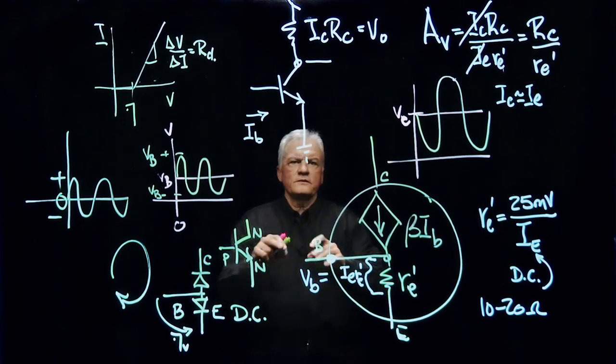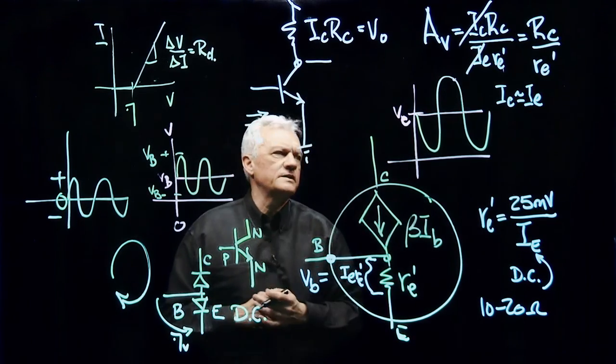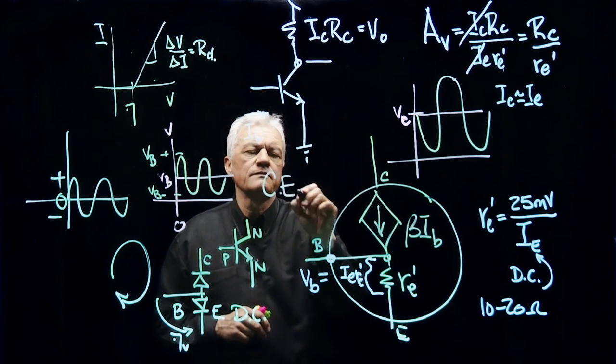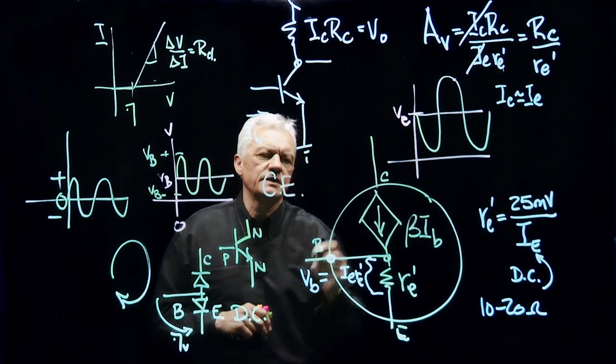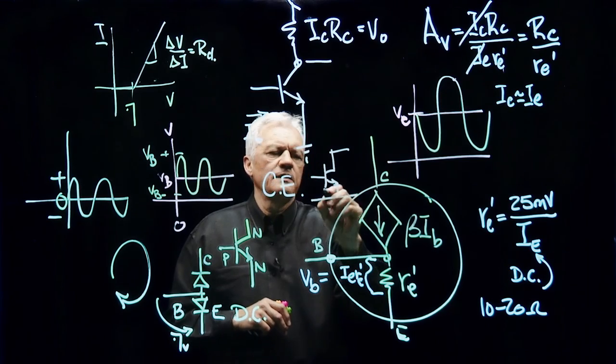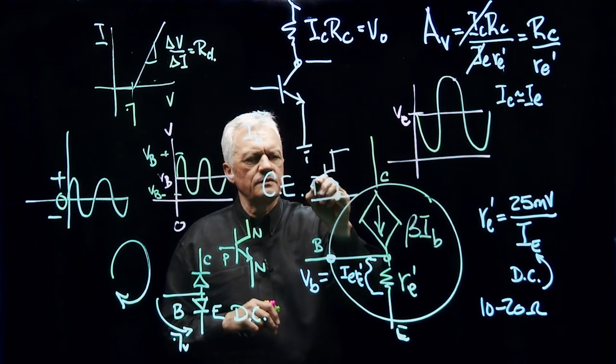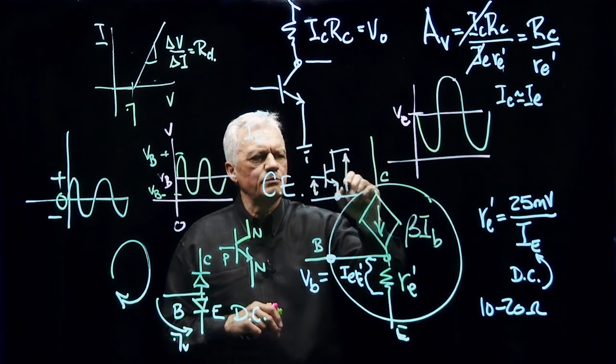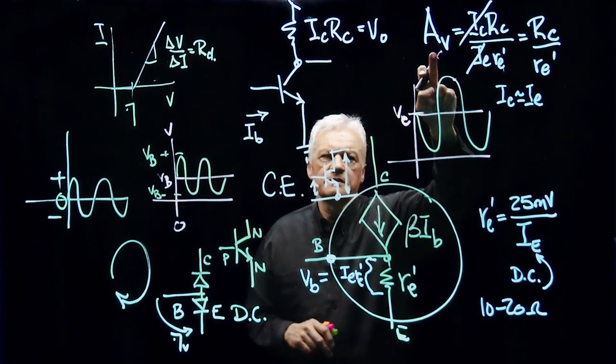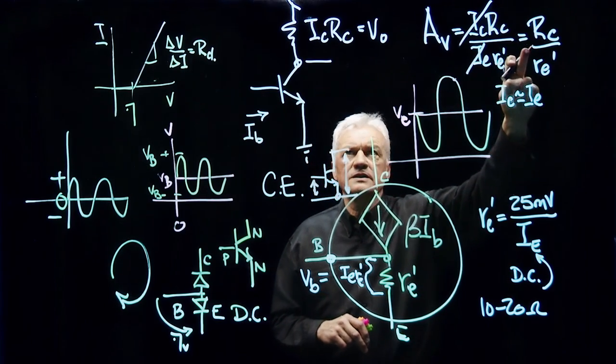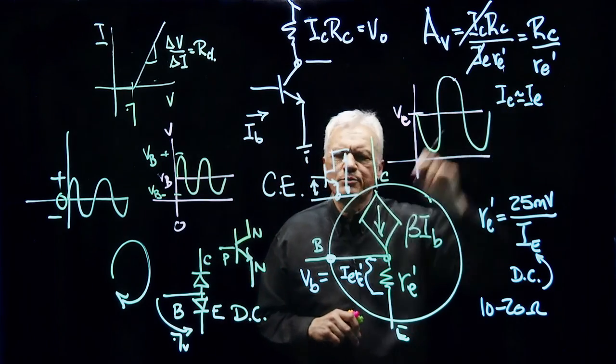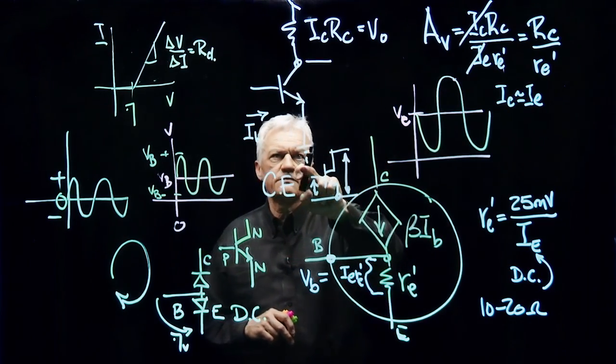For our first configuration, this configuration of transistor, which is also called a common emitter transistor configuration, because if we look at this, the emitter is common to the input signal and the output signal, so for a common emitter configuration, the voltage gain is equal to the collector resistance, AC collector resistance, over r e prime in this configuration.